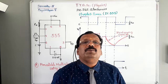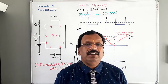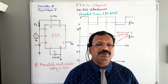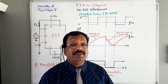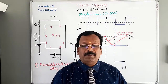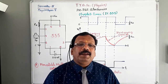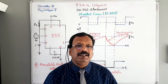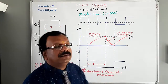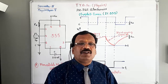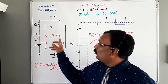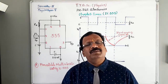Now let us discuss the monostable multivibrator. 'Mono' means single. According to this name, the monostable multivibrator using IC555 has one stable state. Remember: monostable means single stable state. The multivibrator which has one stable state is called a monostable multivibrator. When there is a steady-state condition — that is, when no trigger is applied — the output of this circuit is fixed, either low or high.